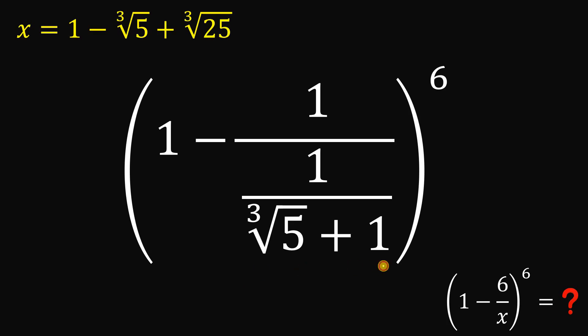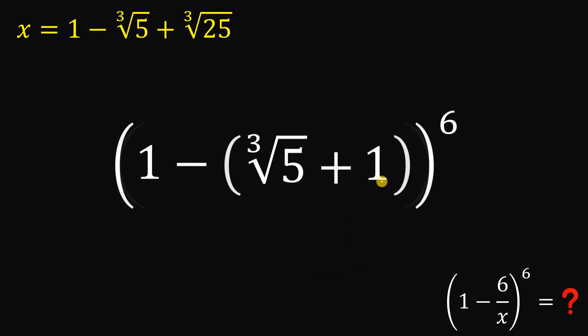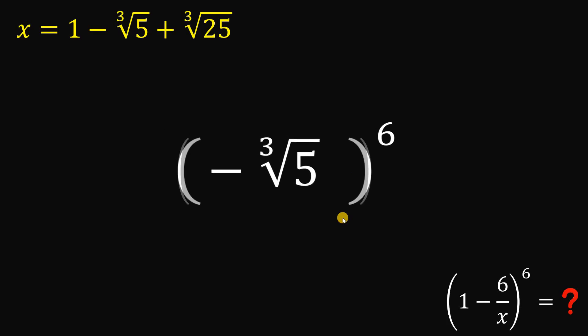Now, let's take the reciprocal of this term. So this will give us the negative of cube root of 5 plus 1. Now, 1 minus 1 is just 0. So the expression inside the parentheses is simply equivalent to negative cube root of 5.